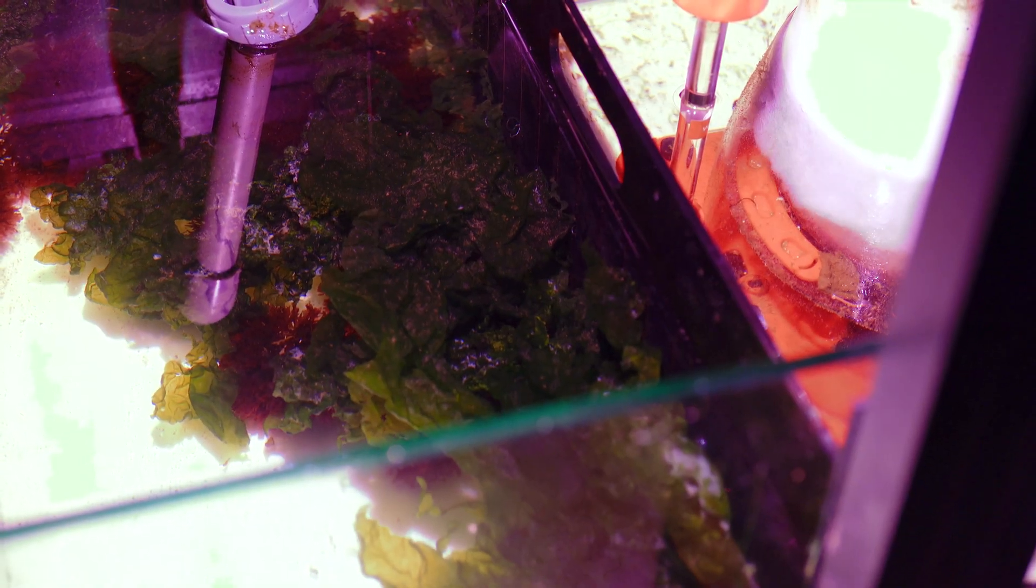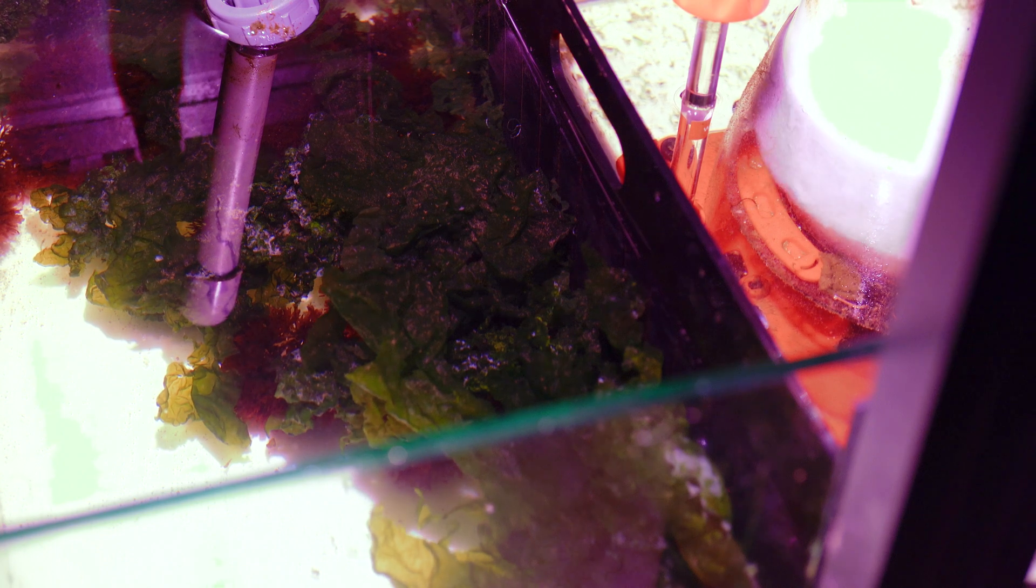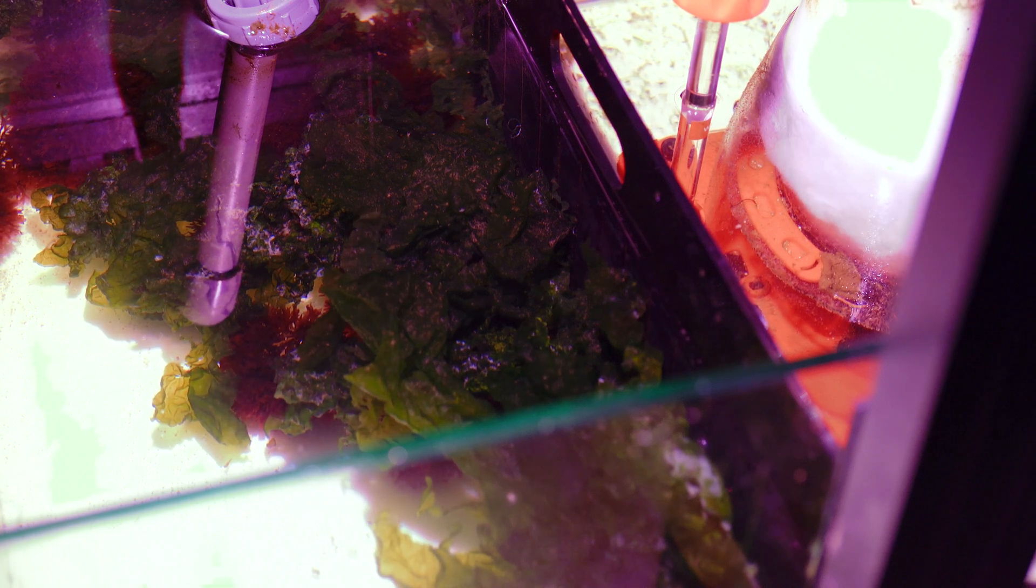A major challenge when using Ulva lactuca is positioning. Because of its large blanket-like thallus, it can catch a current easily. You may find it on the surface or stuck in a corner of your refugium. A soft rolling current is ideal for this algae. Ulva will naturally move to where the water flows through and could cause clogs for sumps with restricted areas for water to flow through.